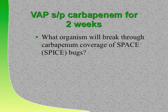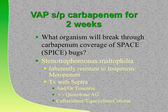Now we're into ventilator-associated pneumonia two weeks on a carbapenem. What bug is going to break through? We need third-line drugs. What bug is inherently resistant to carbapenems and begins with the letter S? Stenotrophomonas. Your drugs are Septra, Timentin, or ceftazidime. You will rarely see ID colleagues use ceftazidime or Timentin except to treat Stenotrophomonas.